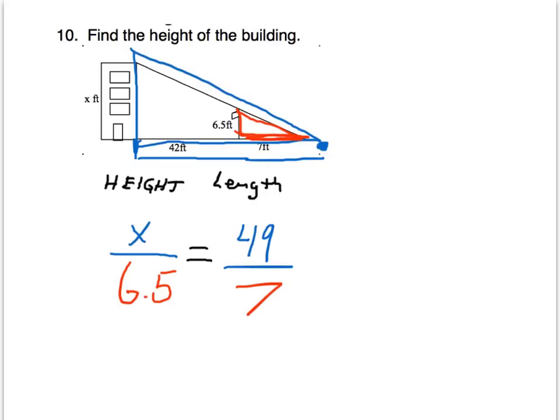Let's cross multiply to solve the problem. 7 times x, and 6.5 times 49. Dividing by 7 on both sides gives us that x equals 45.5 feet.